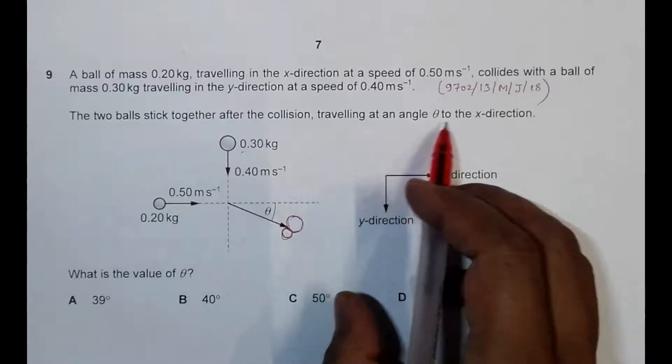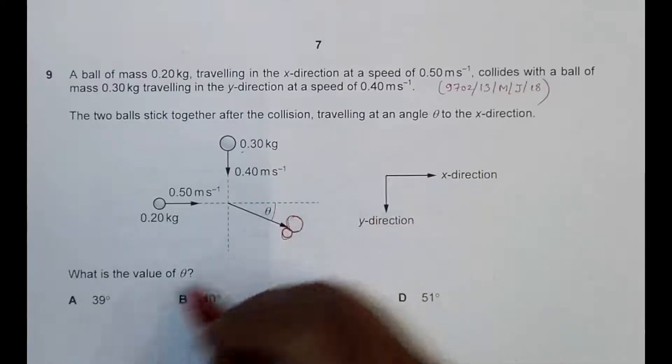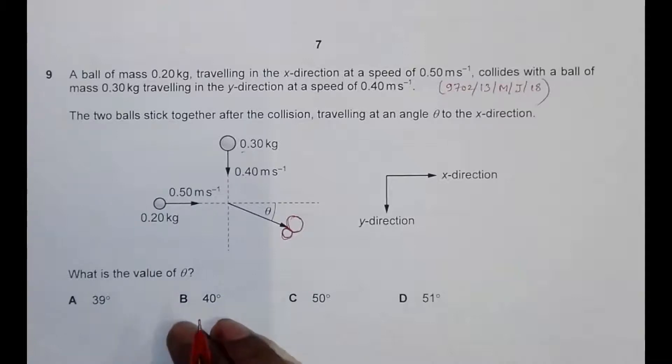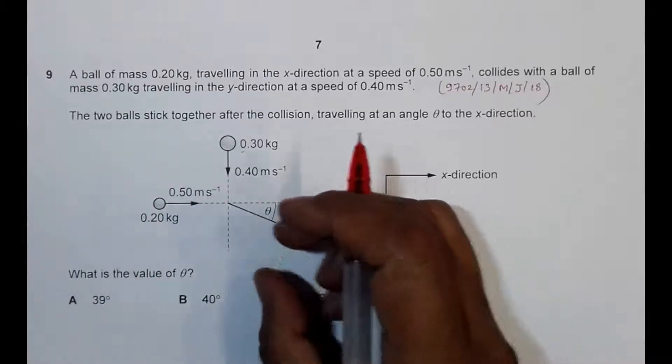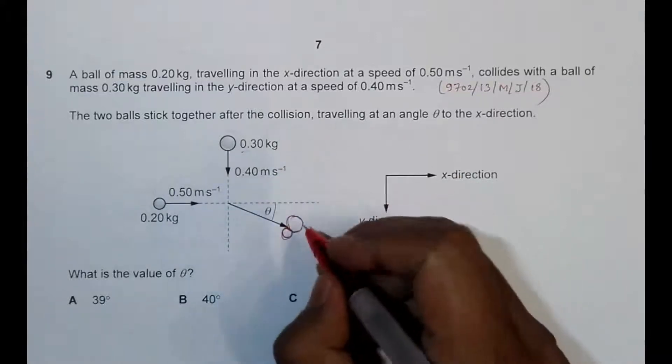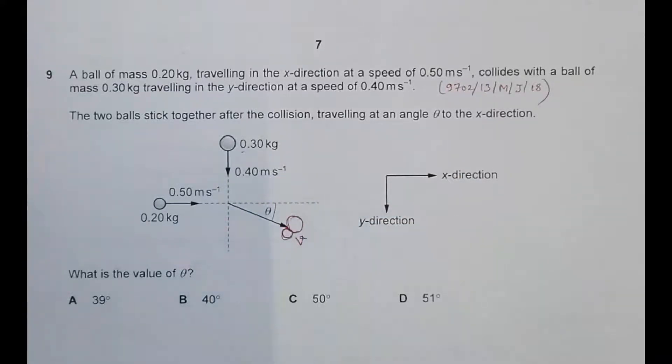Traveling at an angle theta to the x direction, so we have to find the value of this theta. So let us assume that the velocity of the combined velocity of this thing is v. The velocity of the combination is v.